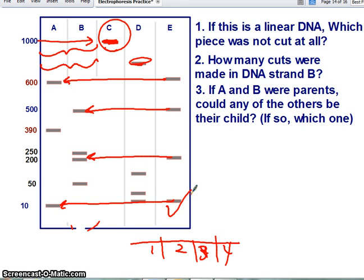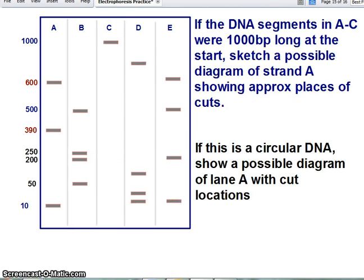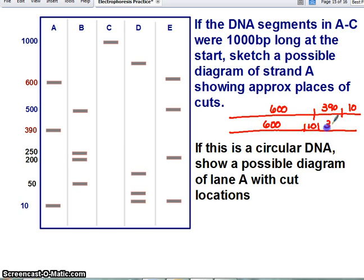Again, I realize the bands don't add up perfectly. Okay, this one, they wanted a possible diagram showing cuts, possible places for cuts in A. So the whole thing was 1,000 base pairs long, and we had bands at 600, 390, and 10. So you'd get 600, 390, 10. There would be absolutely nothing wrong with doing 600, 10, 390. That would be fine too, or any combination, because with the information you have, it doesn't really give you any idea of the order.